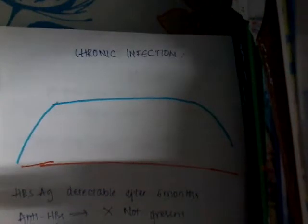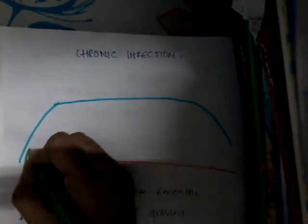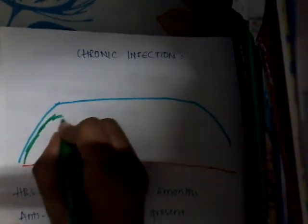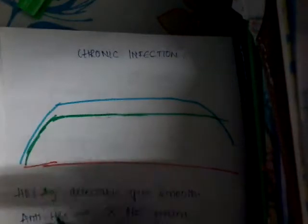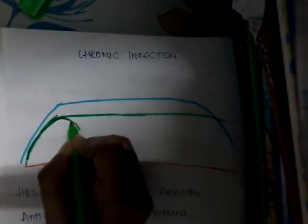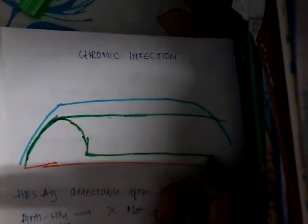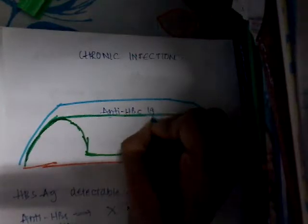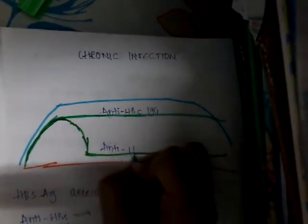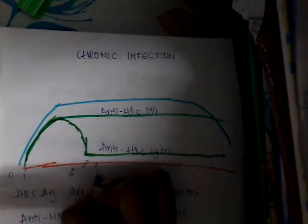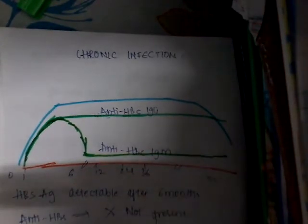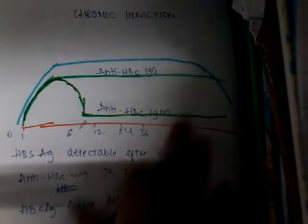Anti-HBc antibody is detectable initially, and IgG persists forever whereas IgM decreases and persists at least values. Looking at a timeline of 0, 1, 6, 12, 24, 36 weeks up to 120 weeks (6 months): anti-HBc IgG persists long-term while IgM anti-HBc gradually decreases.